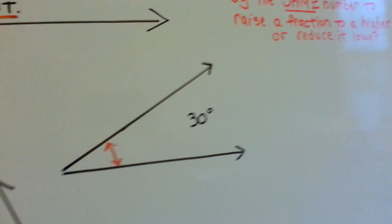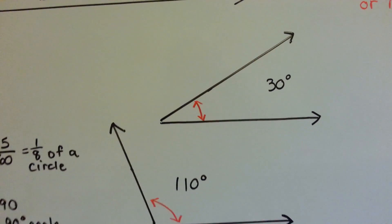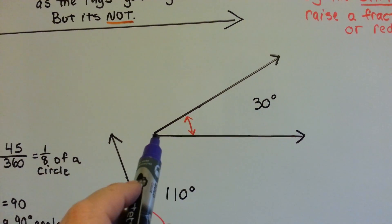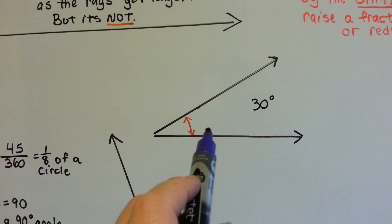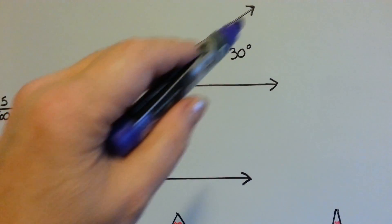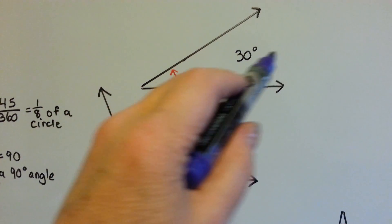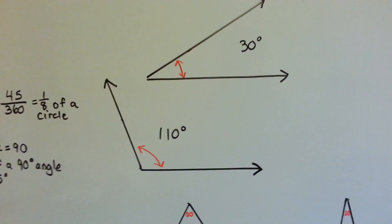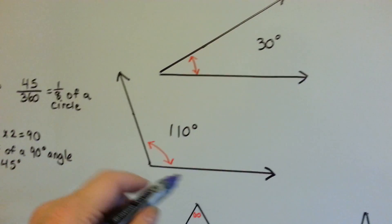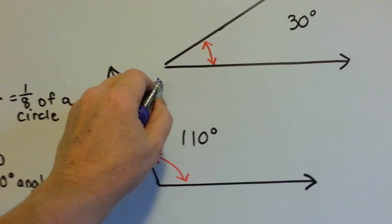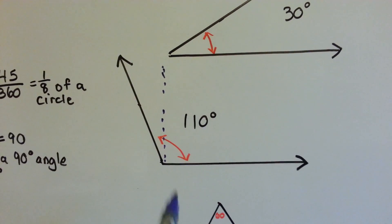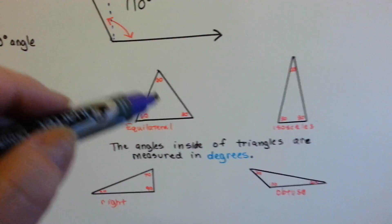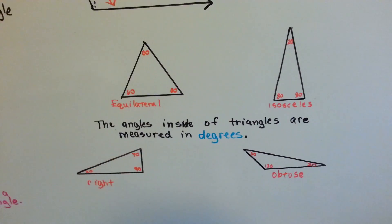Angles can be any number between 0 and 360 — it could even be half of a degree. This one's 30 degrees. That's an acute angle, because it's smaller than 90 degrees. Those are acute angles. This one's bigger than 90 degrees, so it's obtuse — it's 110. Our imaginary 90-degree line would be coming down like that, so that's bigger than 90 degrees. It's obtuse. And the angles inside of triangles are measured in degrees.